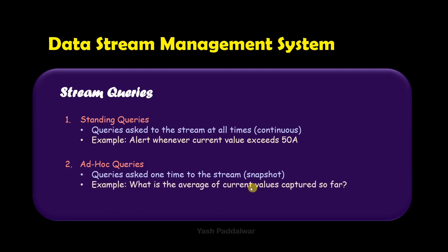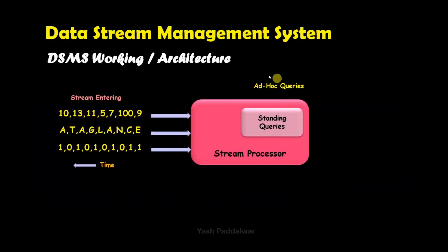For example, if we fire a query asking for the average of all electric current values captured so far, this is a single-time query. Whenever it is fired, all elements captured so far are added together and divided by the total count of elements that have entered the stream processor, generating an average value of the entire stream captured so far. This average output is returned to the ad hoc query.